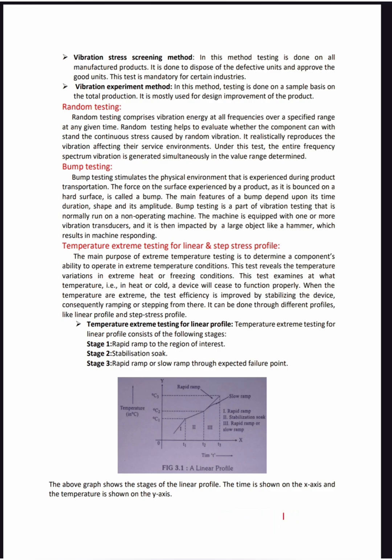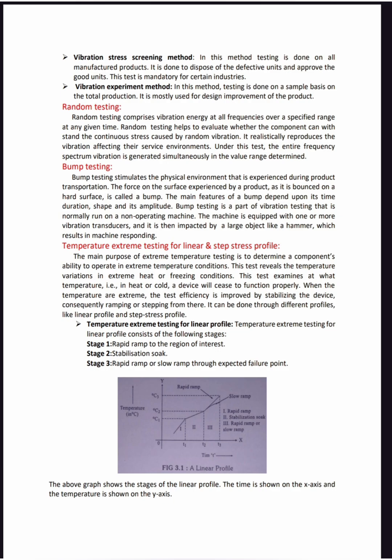the product may bounce and move a lot, and the bump testing evaluates whether it can withstand that. Bump features depend on duration, shape, and amplitude. The bump testing machine uses one or two vibration transducers, a large hammer, and an object which makes the test possible. The results are recorded to a spectrum analyzer.